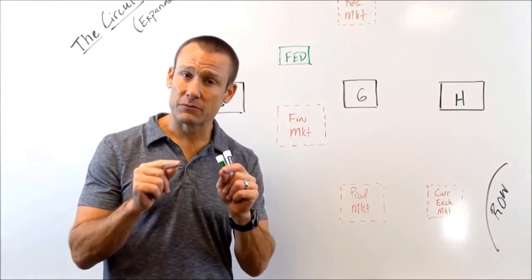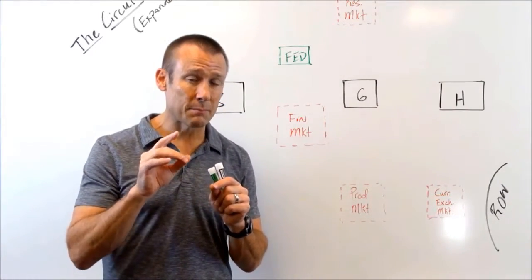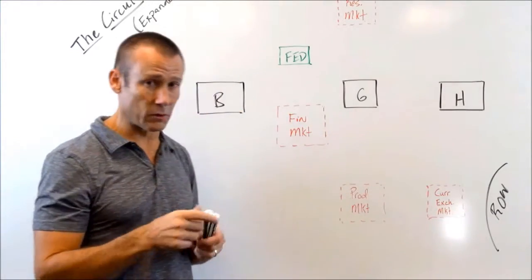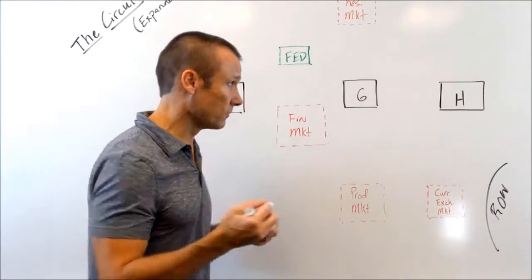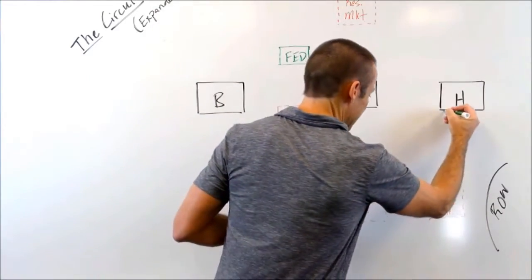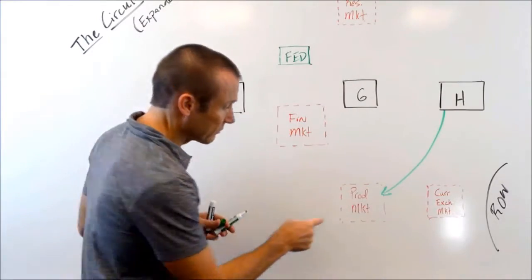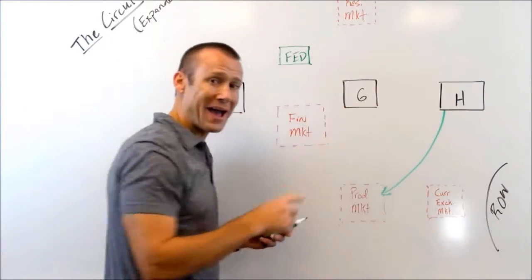I'm only drawing the money flows. I want you to understand that pretty much anytime money flows somewhere, something else is flowing back. Let me just show you very quickly with my first money flow. Households, they take money to the product market to buy goods and services. Of course, goods and services are going back the other way.